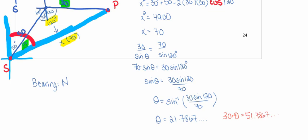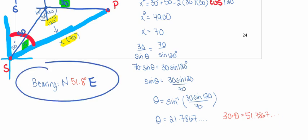I'll say that's about 51.8 degrees. On a quiz or a test it'll tell you what to round to. We are going 51.8 degrees east of north — so there's our bearing.